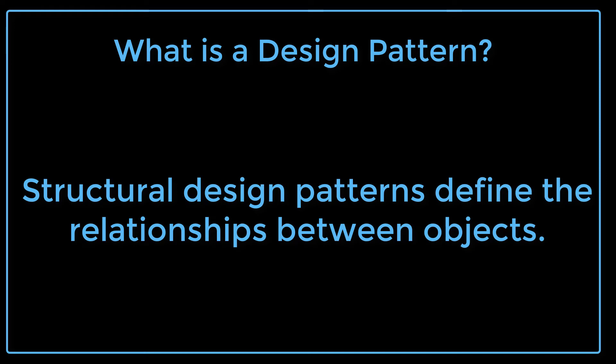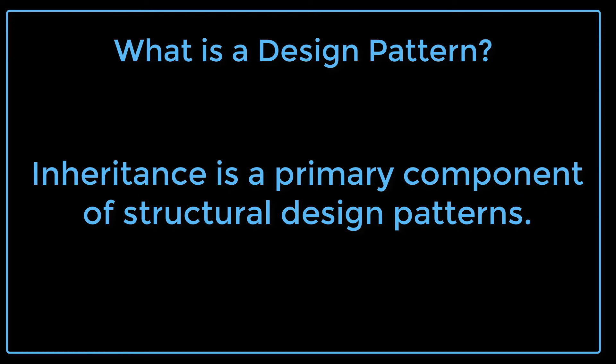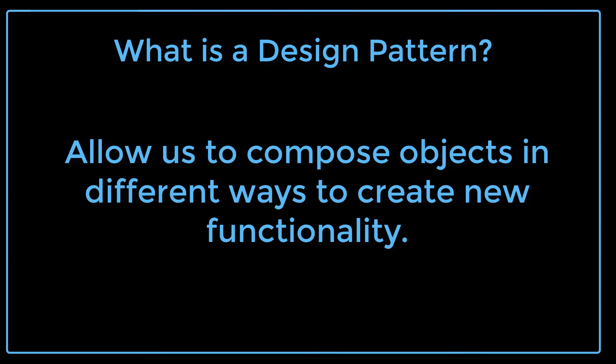Structural design patterns define the relationships between objects. They help ensure that even if one part changes, the entire structure of the code doesn't need to change. The patterns focus on inheritance as a primary component, specifically how classes inherit from one another and how they are composed from other classes.